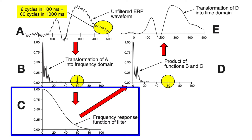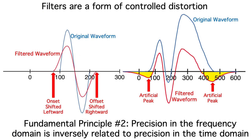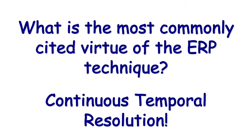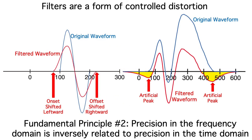In my lab, we like to use frequency response functions that are pretty gradual, like this one. That's because of fundamental principle number two: precision in the frequency domain is inversely related to precision in the time domain. So the more heavily you filter the data, and the sharper your filter is, the more temporal resolution you've lost. And isn't temporal resolution one of the greatest virtues of the ERP technique? But even more importantly, heavy filtering can produce problematic distortions.